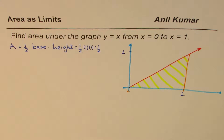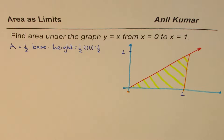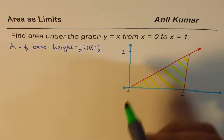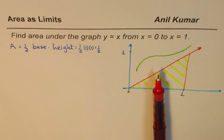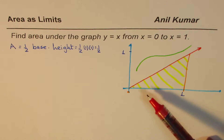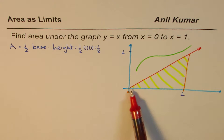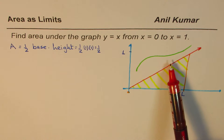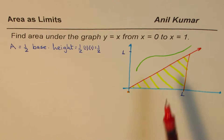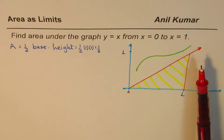The idea is that we are developing a concept here. Remember when we found the slope of a tangent line — if it was a straight line it's simple, but for a curved line we used the concept of a secant approaching the tangent, slope of secant approaching slope of tangent. That's what we're going to do here. We'll make rectangles, and as we increase the number of rectangles, the area will approach the exact area under the curve.